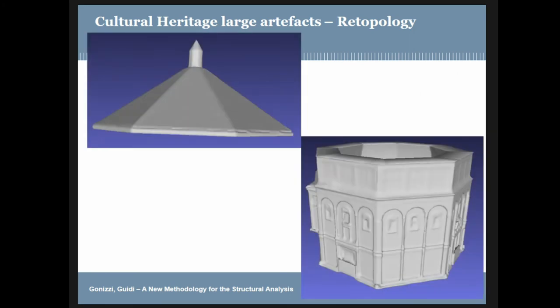What I did with the baptistry was also to try a simple segmentation, because the lower part is made of stone and the dome is made of masonry, so you need to assign different material parameters to these two parts. But there is also another problem: the entire lower part is covered by marble in different layers. So this is another challenge that arose after the PhD — dealing with ancient structures means dealing with different materials, and this is something that has to be further investigated.